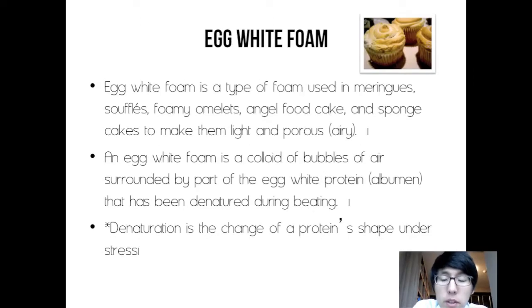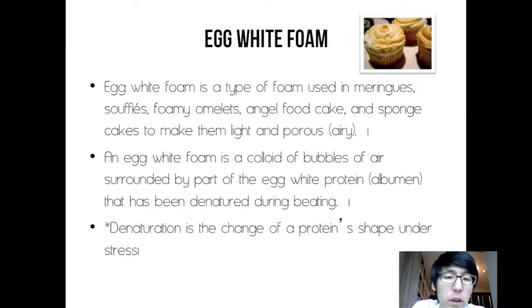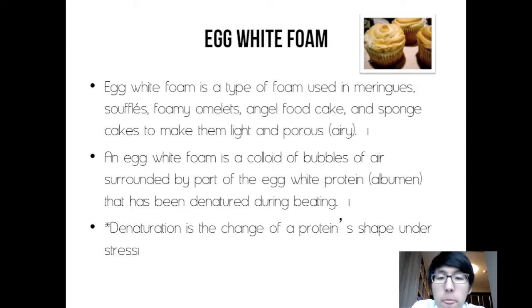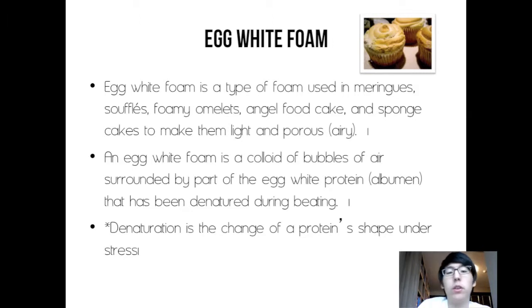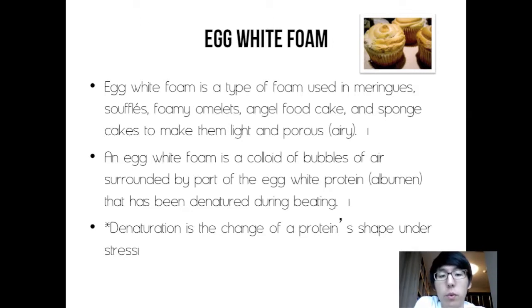An example is egg white foam. An egg white foam is the type of foam used in meringues, omelets, angel food cake, and sponge cakes to make them light and porous or airy. An egg white foam is a colloid of bubbles of air surrounded by part of the egg white protein that has been denatured during beating.